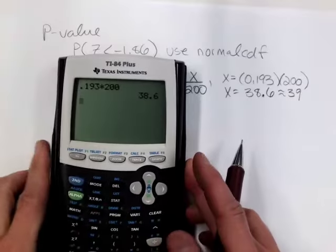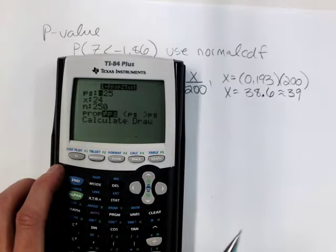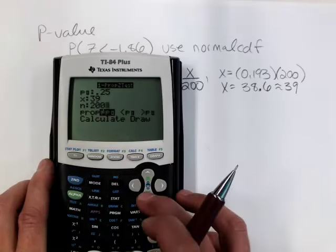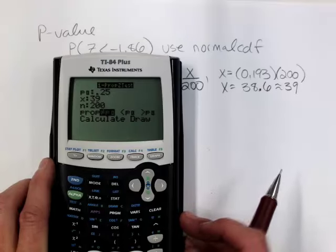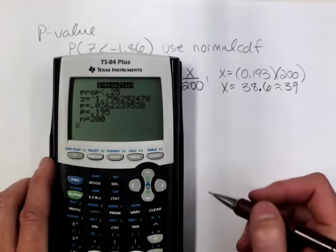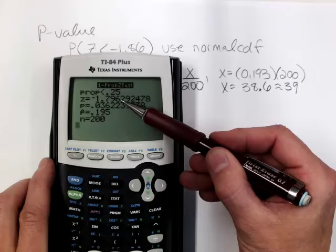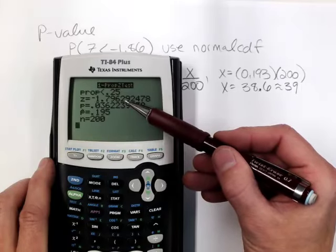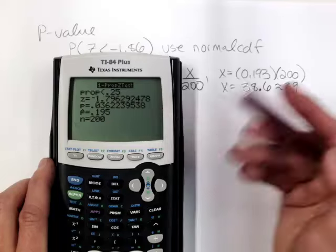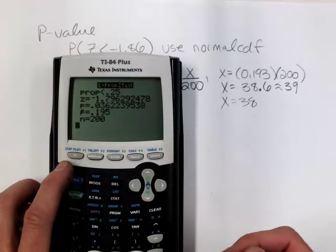Going back to the one-proportion z-test: my number of successes is about 39 out of 200. I'll change my alternative to less than. The z value is negative 1.796. By hand we got negative 1.86. Out of curiosity, I'll change x to 38 and see if that gets closer to the hand-calculated test statistic.